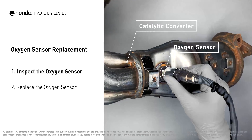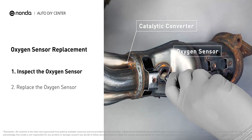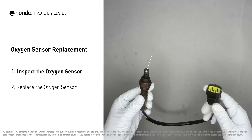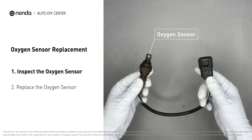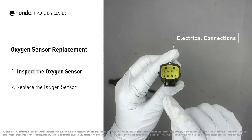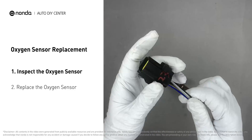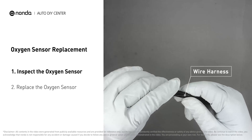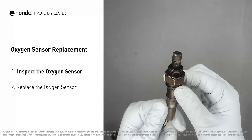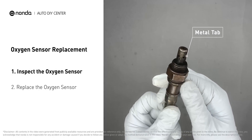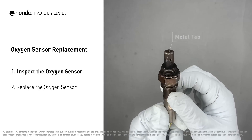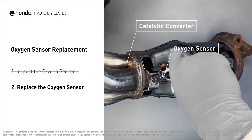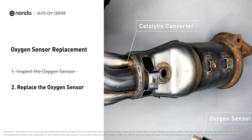Carefully remove the oxygen sensor from the catalytic converter. Visually check the oxygen sensor's electrical connections, wire harness, and metal tabs for any damages. If damages are found, then replace the oxygen sensor.